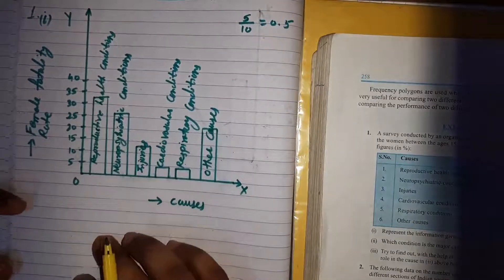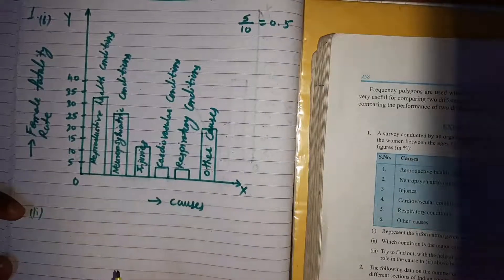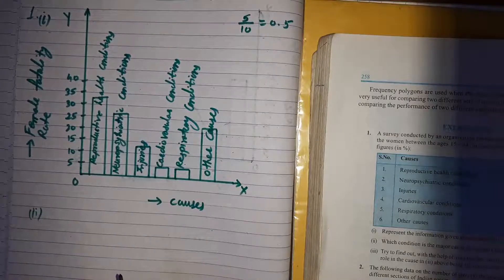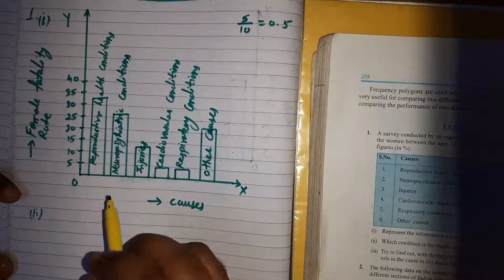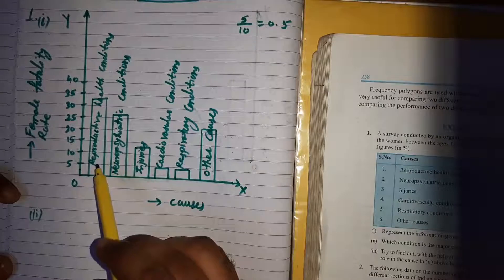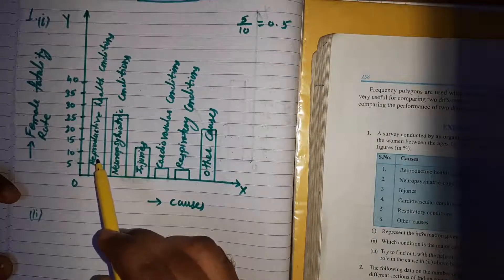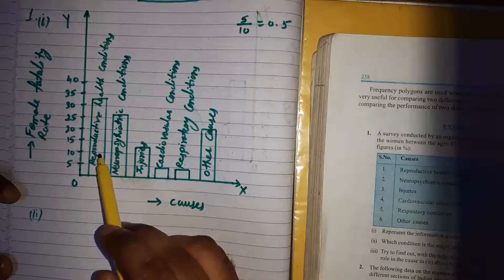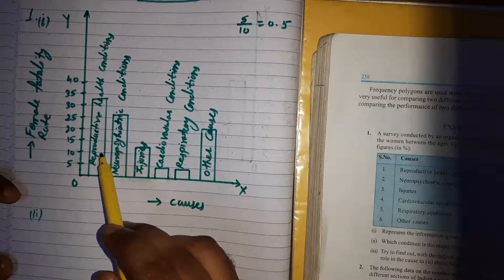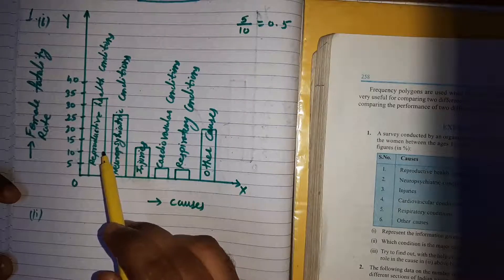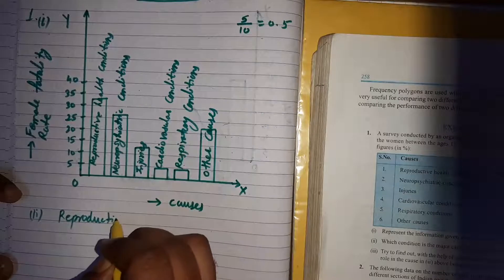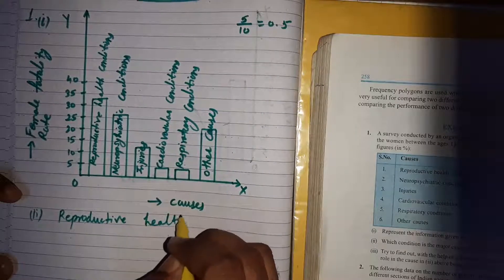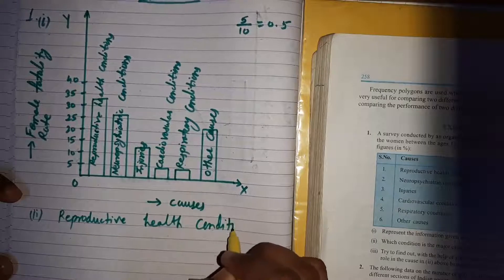The second part asks: which condition is the major cause of women's ill health and death worldwide? From the bar graph, the frequency of reproductive health condition is highest. So the answer is reproductive health condition.